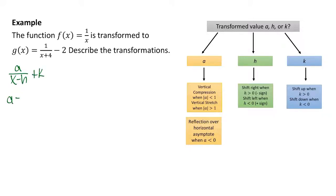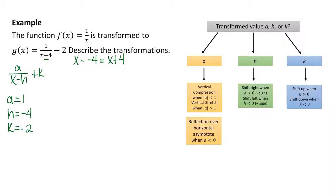You can see that a is 1. h is going to be negative 4, because to get a plus 4 in the denominator you have to write x minus negative 4 — that's how you get x plus 4 in the denominator. So h is negative 4, and k is negative 2. Since a is 1, there's no change from a; a has to be greater than 1 or less than 0 for there to be a change.